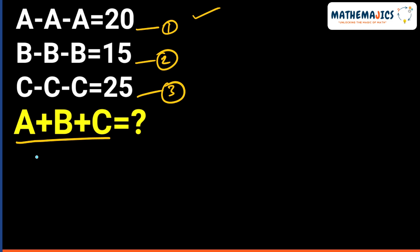So to solve this question, what I did, I added first equation, second equation, and third equation. So what happens if we add these three equations? Let's see. If we add these three equations, we will get A plus B plus C minus 2A minus 2B minus 2C is equal to 60.